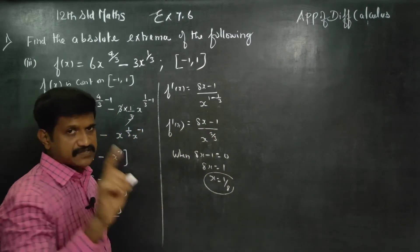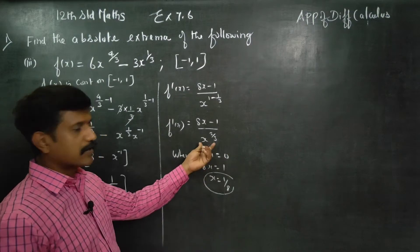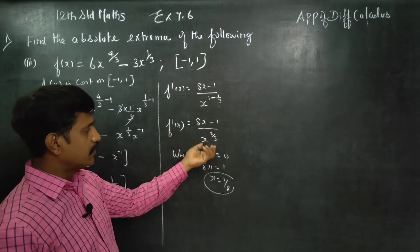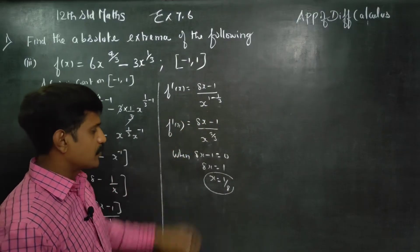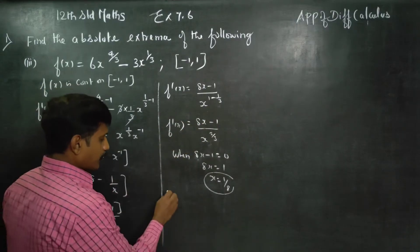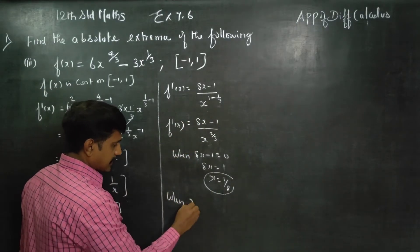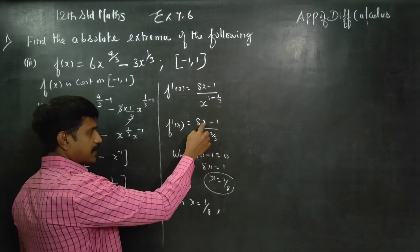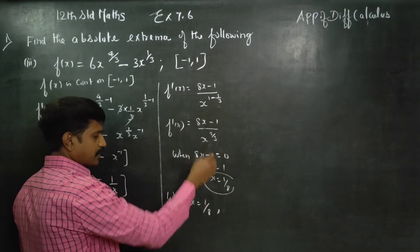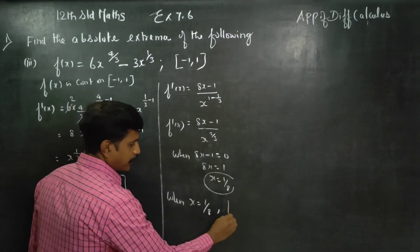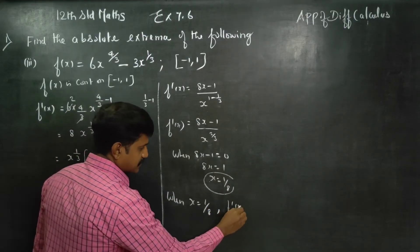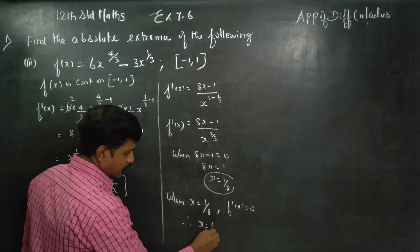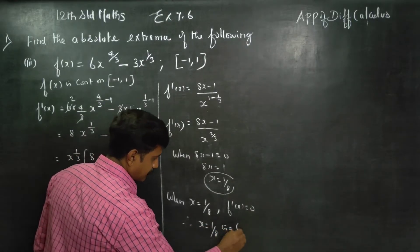For f'(x) to equal zero, the numerator must be zero. When x equals 1/8, substituting gives (8 times 1/8) minus 1 equals 1 minus 1 equals 0. So 0 divided by anything is 0, meaning f'(x) equals 0. Therefore x = 1/8 is a critical number.